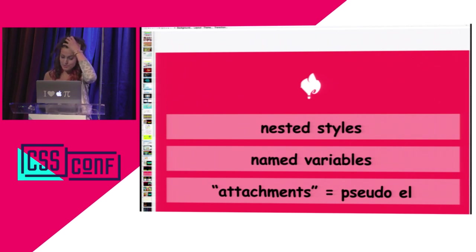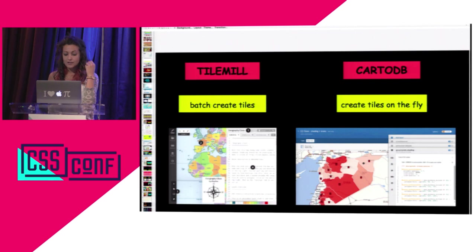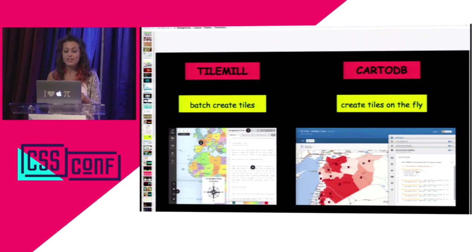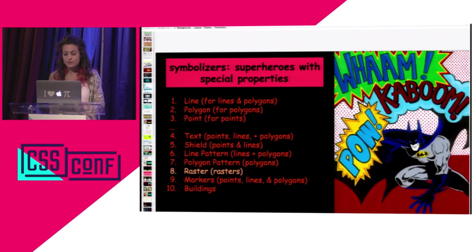CartoCSS has similar properties to CSS: nested styles, named variables, and attachments that are like pseudo-elements — so you can add glows to your lines, points, and polygons. The difference from the previous CascadeNick workflow is that with TileMill you'd batch-create and render tiles, but CartoDB lets you create them on the fly. You can create tiles live while editing your CSS and just reload them in the browser to see how it works before trying it in your JavaScript.